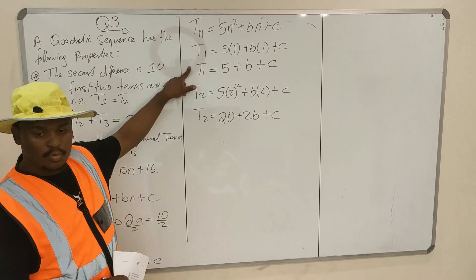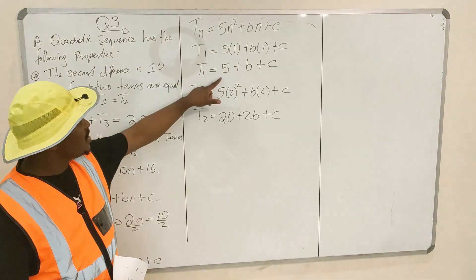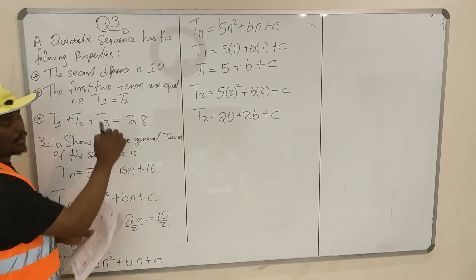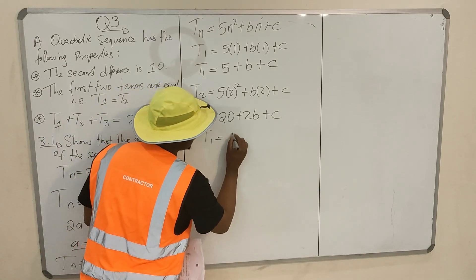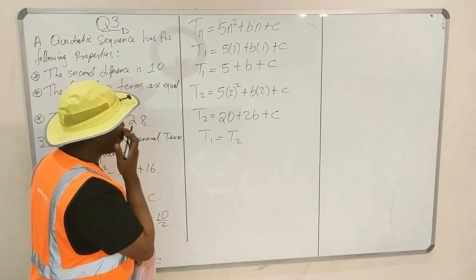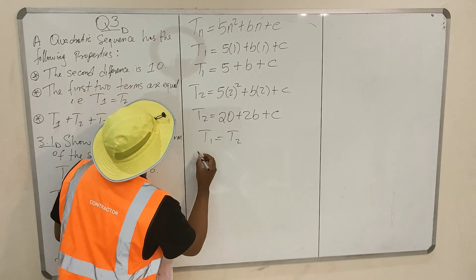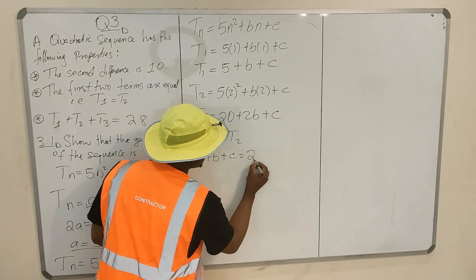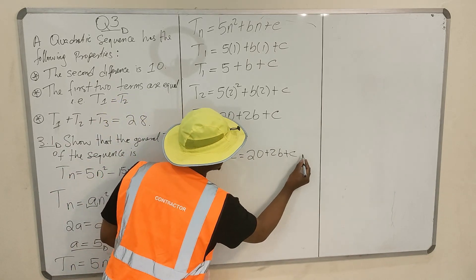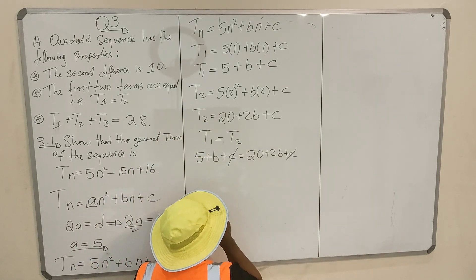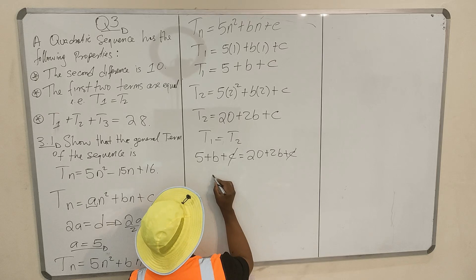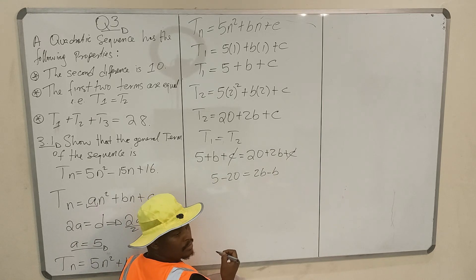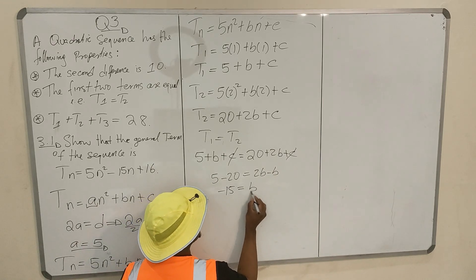What were you told about term 1 and term 2? They're equal. So you can equate these two expressions. The second property tells you T₁ = T₂, which means 5 + B + C = 20 + 2B + C. The C terms cancel. So 5 minus 20 = 2B minus B, giving us minus 15 = B.